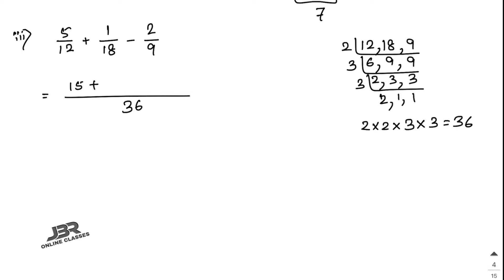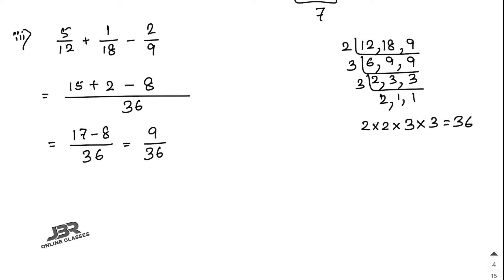With LCM 36: 12 times 3 is 36 so 5 times 3 is 15; 18 times 2 is 36 so 1 times 2 is 2; 9 times 4 is 36 so 2 times 4 is 8. So 15 plus 2 minus 8 equals 9/36. Cancel the 9 to get 1/4 as the final answer.